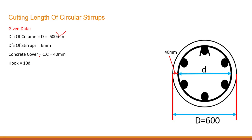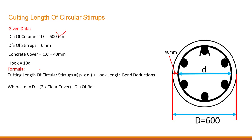And the hooks, we have two hooks over here, it is 10D. So cutting length formula for this kind of stirrup, this circular stirrup, we know is Pi into D.